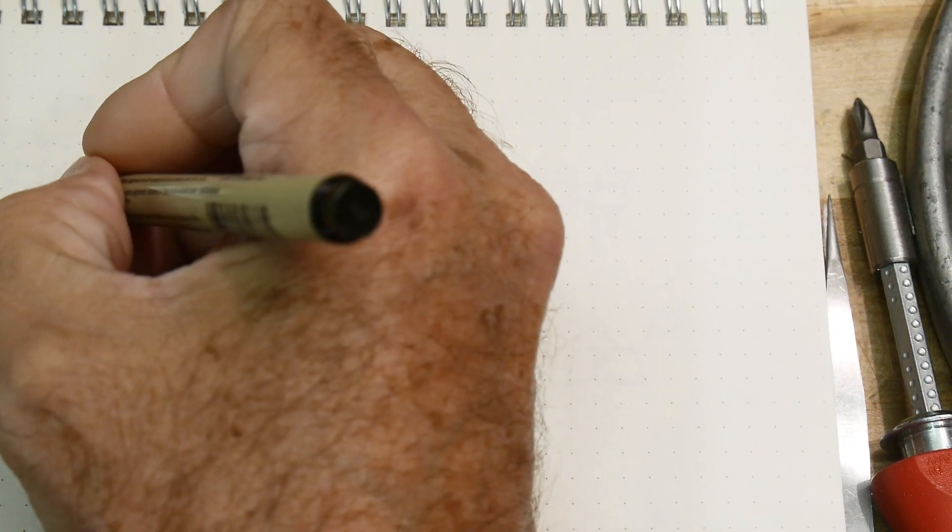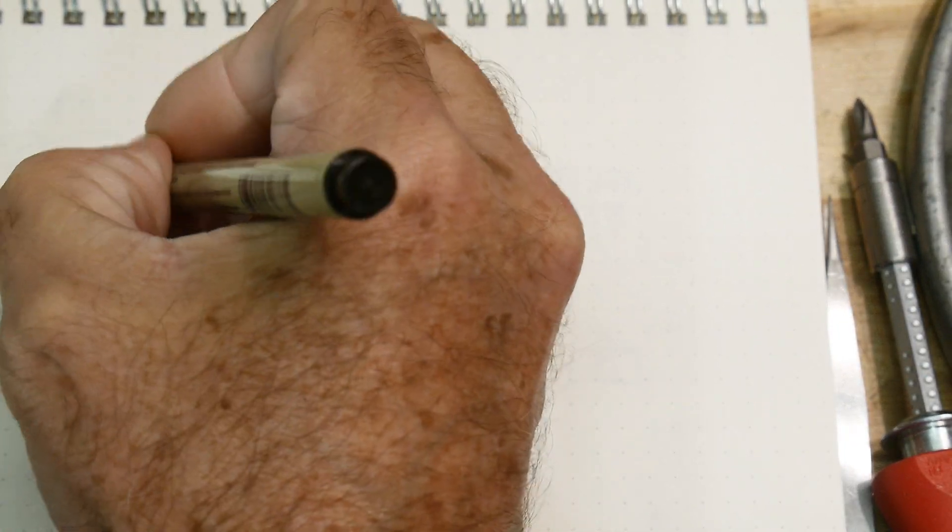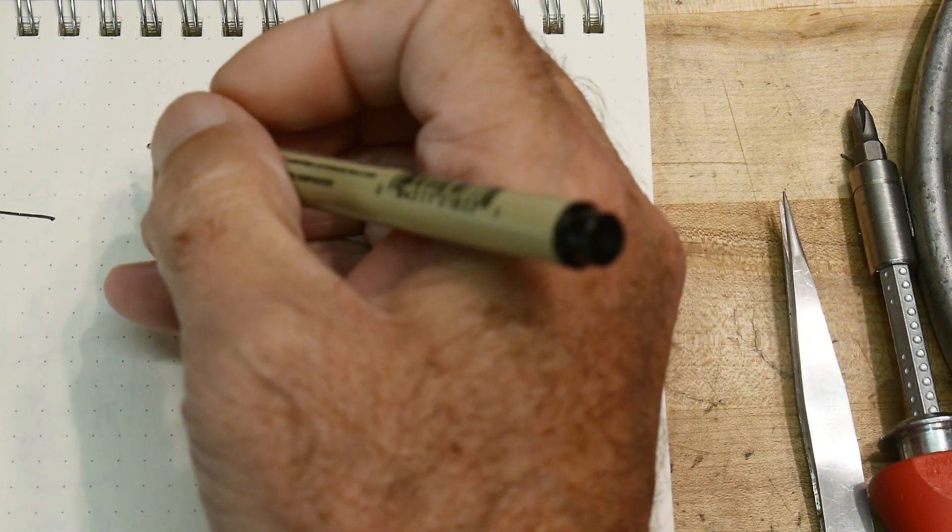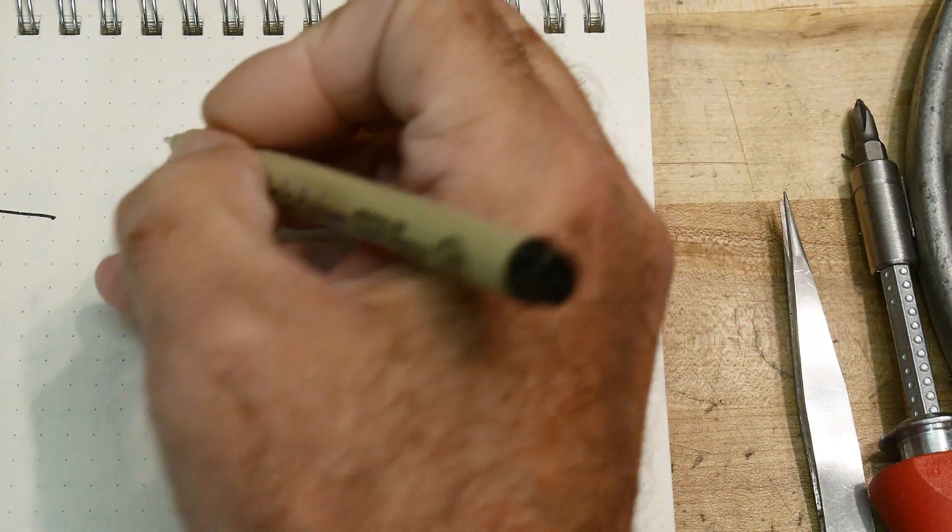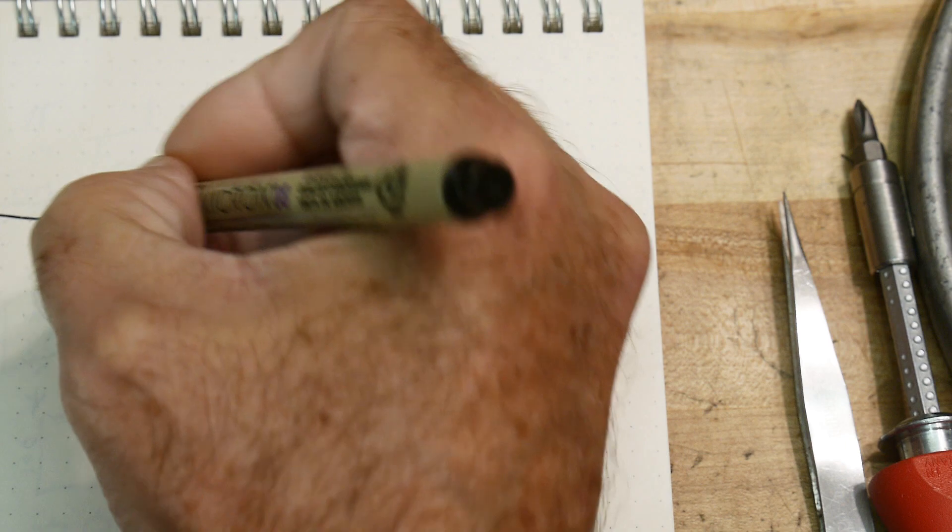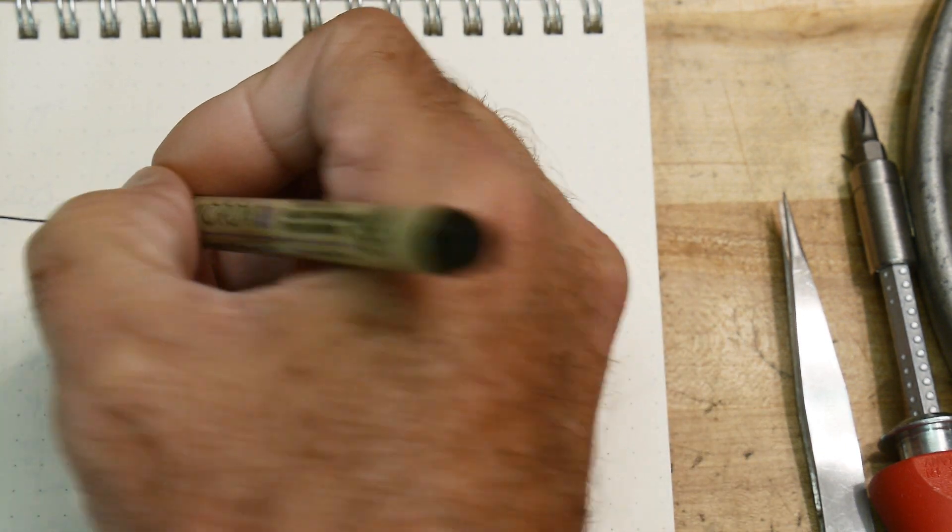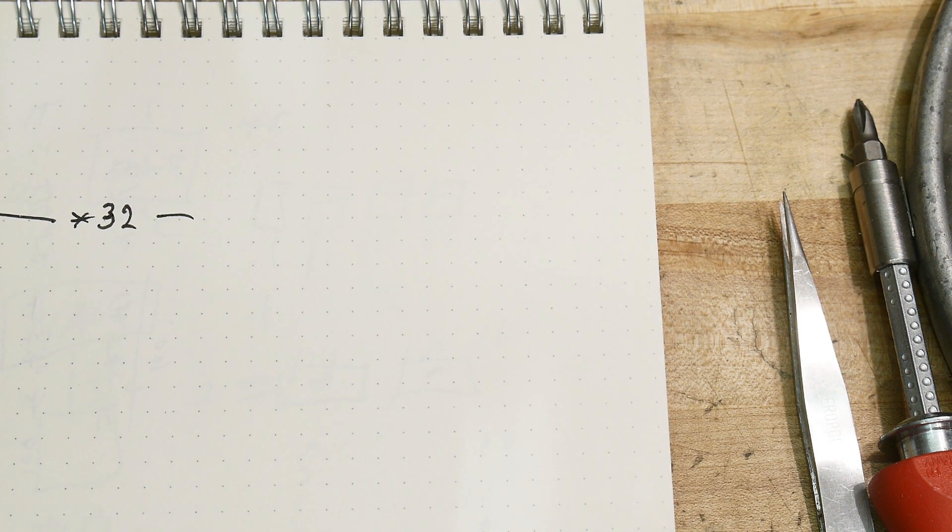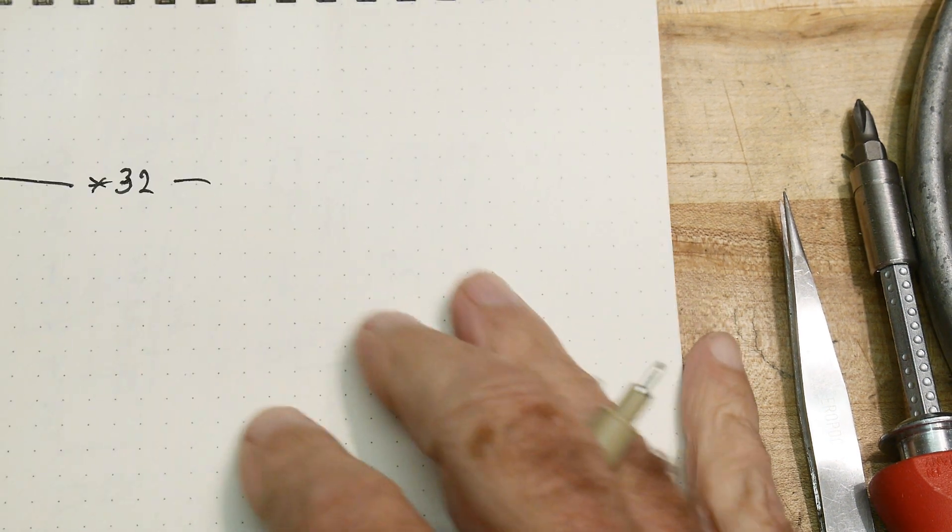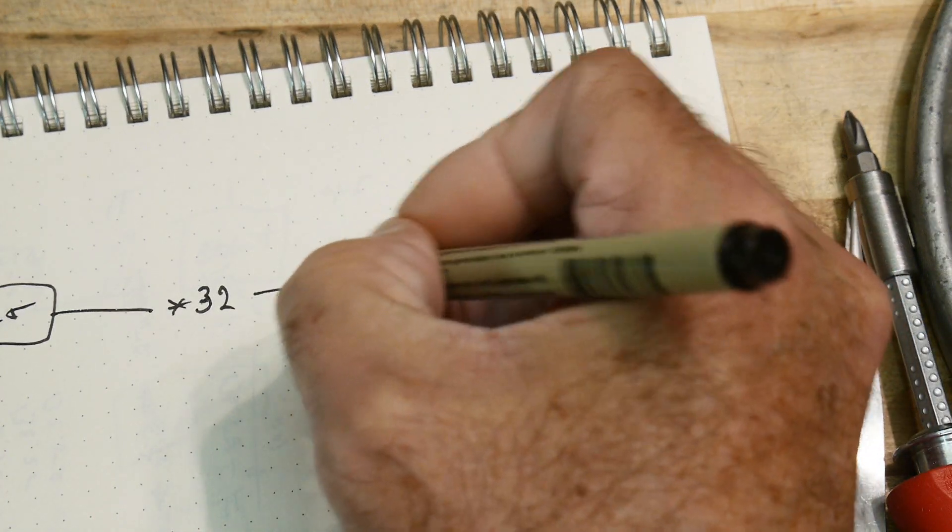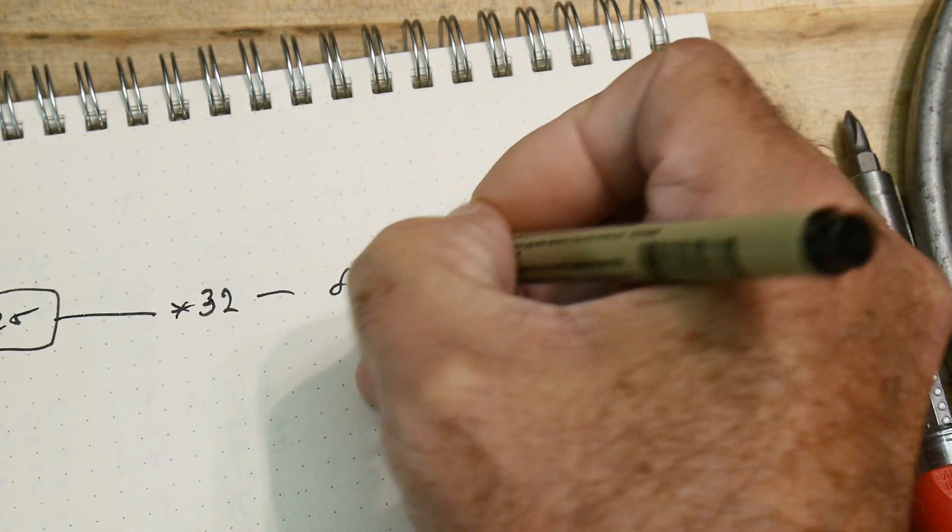All right, so we're going to have 25 megahertz, and it's going to come into our chip, and we're going to multiply it up. So what if we multiply it by, let's see, how about 32? We're going to multiply it by 32, all right? And so we're going to need a calculator for this stuff. All right, so let's bring a calculator in, oops, 25 times 32 gives us 800 megahertz, okay?